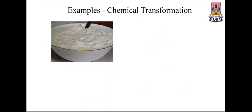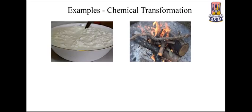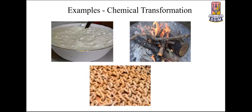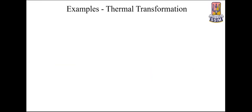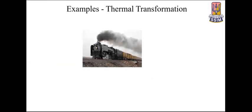Coming to chemical transformation: formation of curd from milk, burning of wood or coal, and rusting of iron. Here a chemical reaction takes place and the composition of the input is entirely changed. For thermal transformation, the input is coal and water; the transformation produces steam as output — the conversion of water into steam by burning coal.